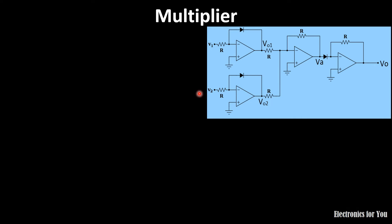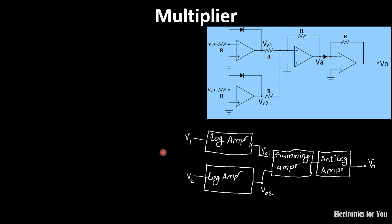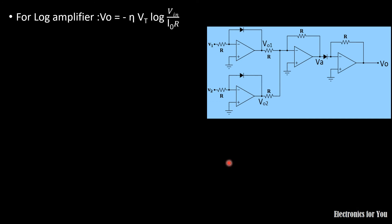This is the circuit diagram for the analog multiplier. Two log amplifiers take the inputs V1 and V2, and their outputs are given to a summing amplifier, which is further cascaded to the antilog amplifier. You can remember this easily using the block diagram: two log amplifiers connected to a summing amplifier, whose output feeds the antilog amplifier. V01 and V02 are the outputs of the first and second log amplifiers respectively, Va is the output of the summing amplifier, and Vo is the output of the antilog amplifier.